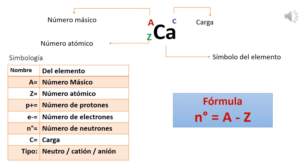A modo de resumen, los elementos que deben estar representados en el átomo son: el nombre del elemento, A (número másico), Z (número atómico), P⁺ (número de protones), E (número de electrones), N (número de neutrones), C (carga), y el tipo, que indica si el átomo es neutro, catión o anión. La mayor parte de esta información se puede encontrar en la tabla periódica. También se puede utilizar por despeje la fórmula N = A − Z, es decir, los neutrones son iguales a la masa menos el número atómico.